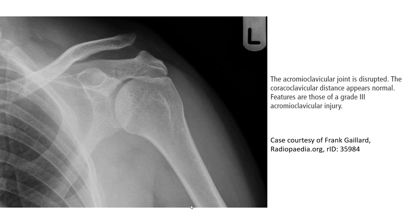This first example shows the acromioclavicular joint is disrupted. The coracoclavicular ligament appears normal. Features are those of a Grade 2 acromioclavicular injury.